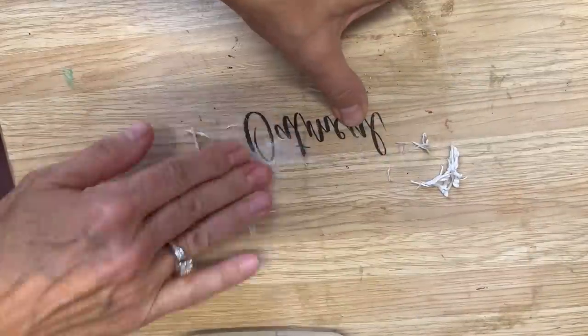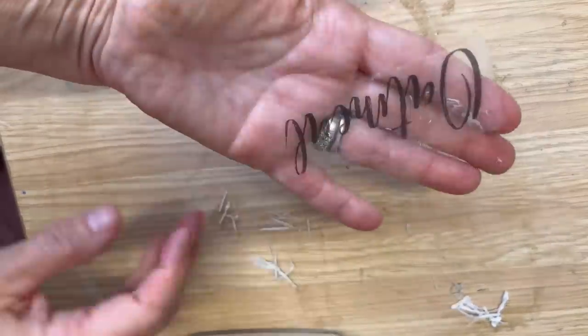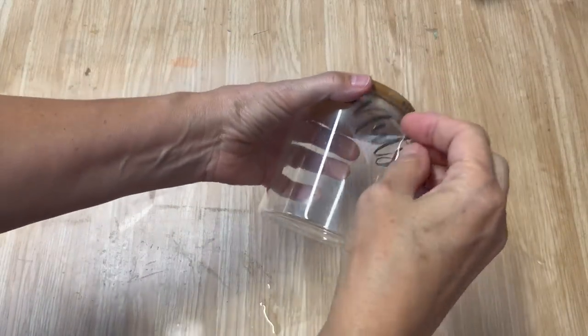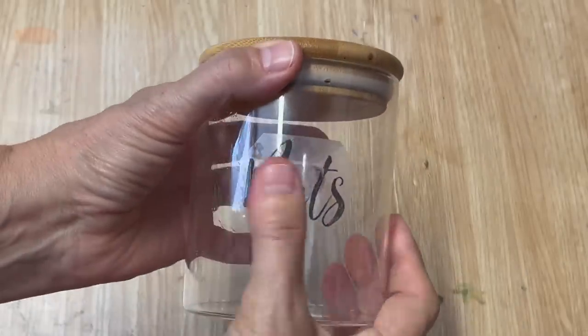Once we get it completely cleaned up, you can apply it onto a glass jar. You can fill it full of nuts or oatmeal or flour or sugar and you know exactly what's in there and they look pretty also.